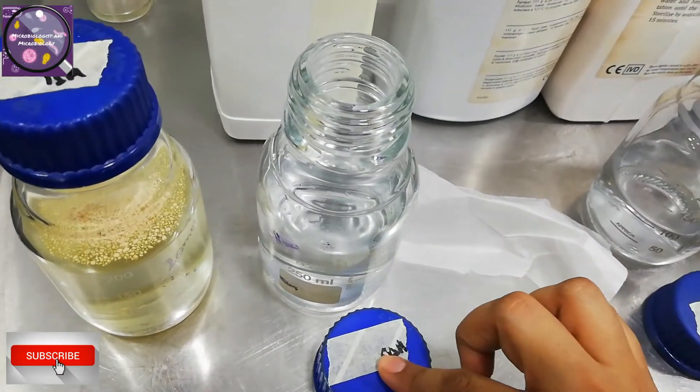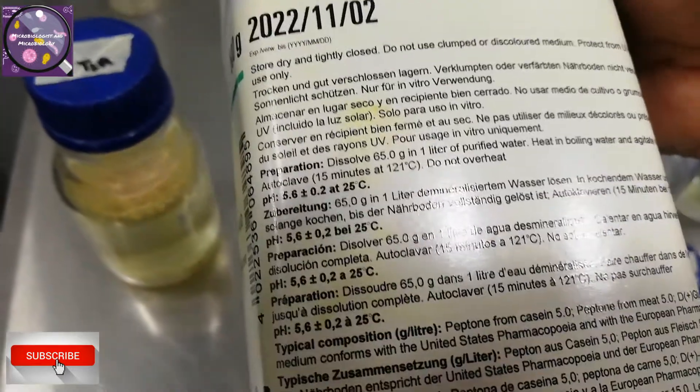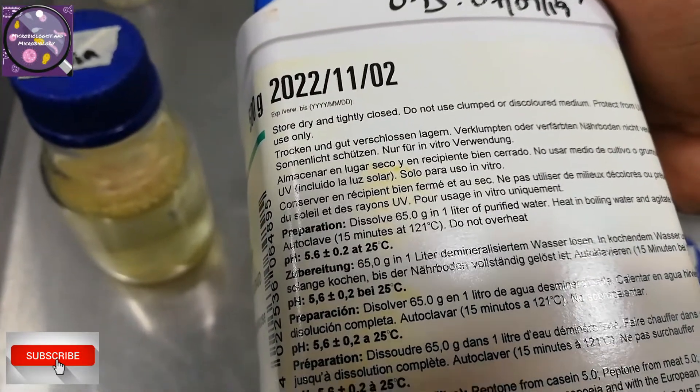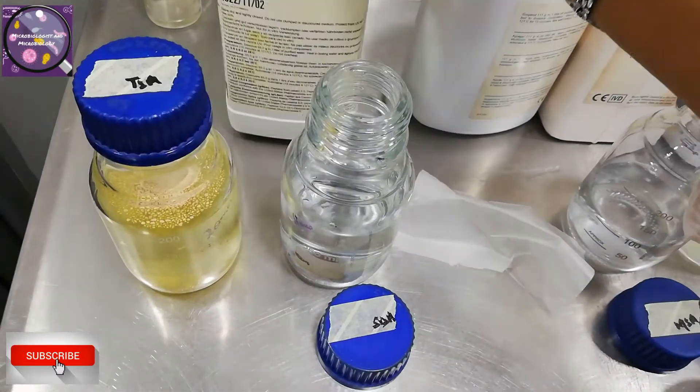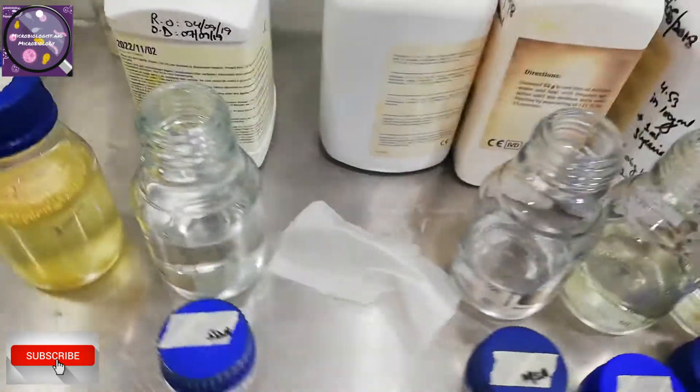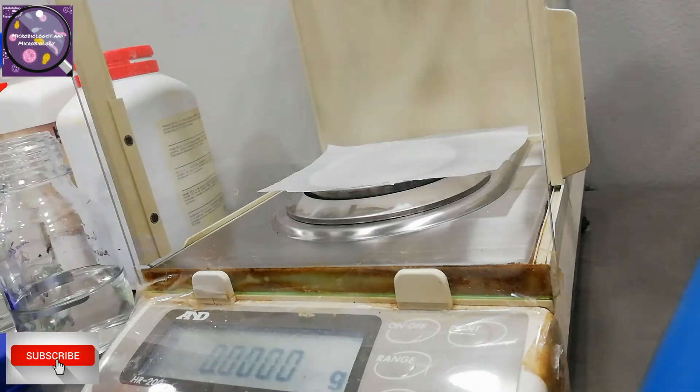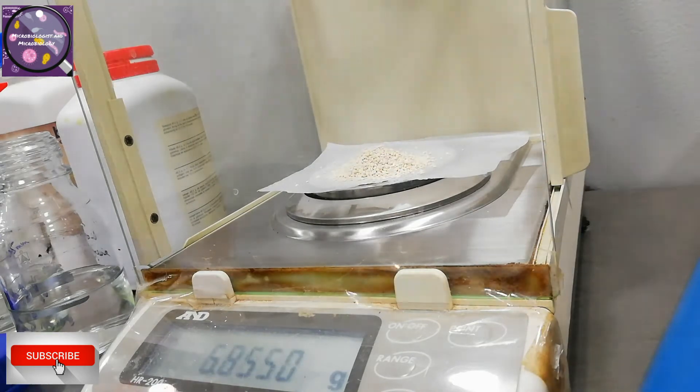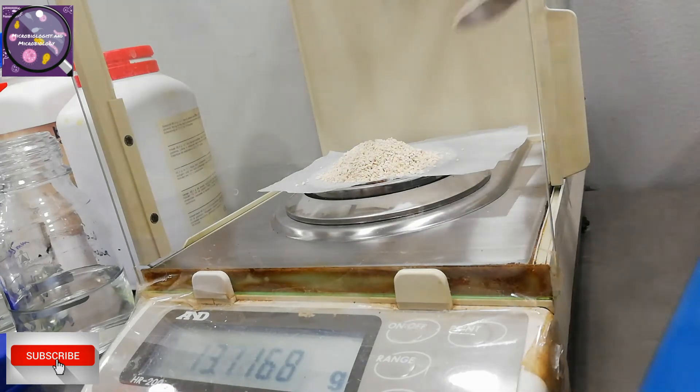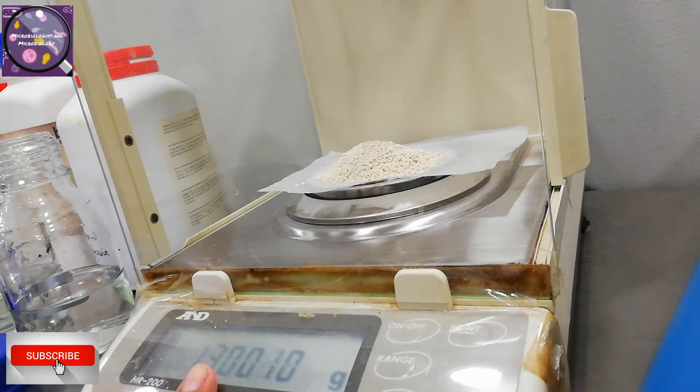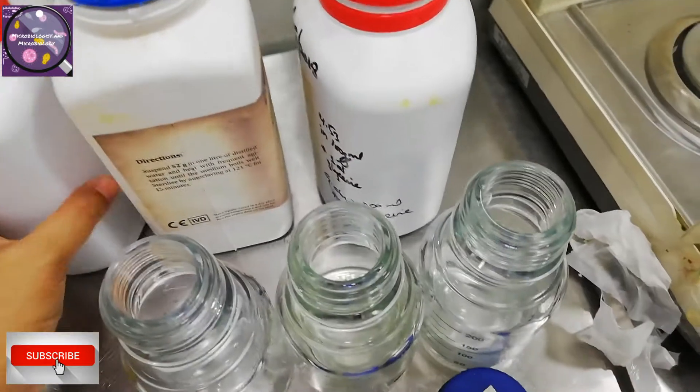Next one is Sabouraud dextrose agar. For this the preparation method is written as: Dissolve 65 grams in 1 liter of purified water, heat in boiling water and agitate until completely dissolved, autoclave 15 minutes at 121 degrees centigrade and do not overheat. As per calculation of 65 grams for 200ml it comes out to 13 grams powder. Now I am weighing the same as I did for tryptic soy agar. Now the 13 grams is accurate and I will put the contents into bottle with 200ml water. For other media preparation I will do the same and will check the back side description to measure the powder.